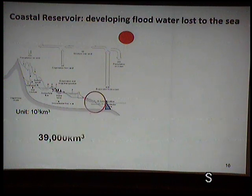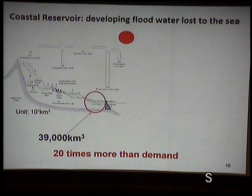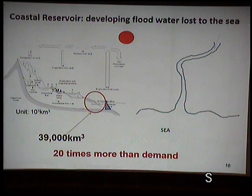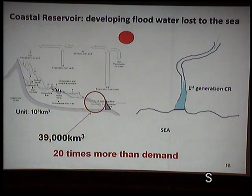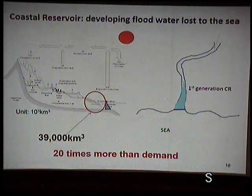We want to build a coastal reservoir in two ways. The first generation is the simplest: follow the coastline to extend the river mouth and create a concave water body in the rivers. This is a straightforward construction approach that most people think of first.